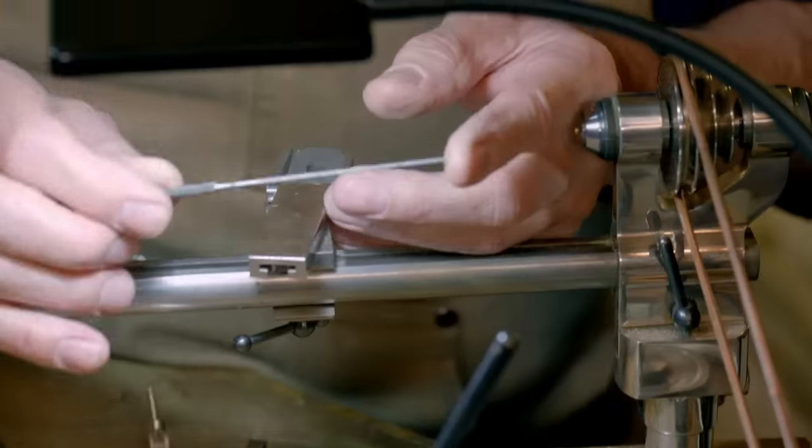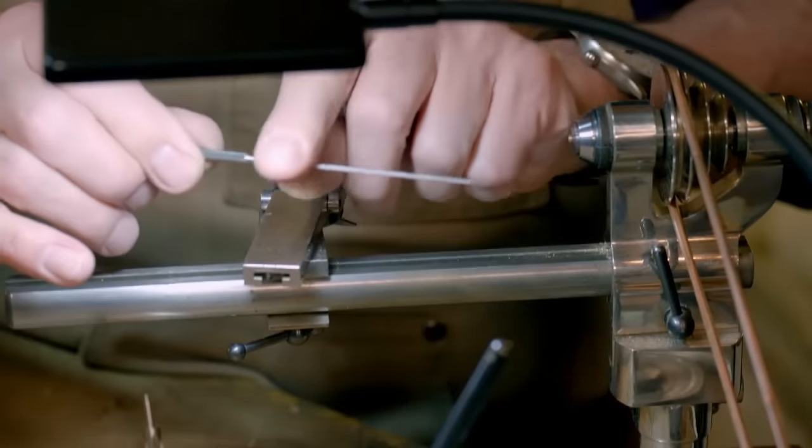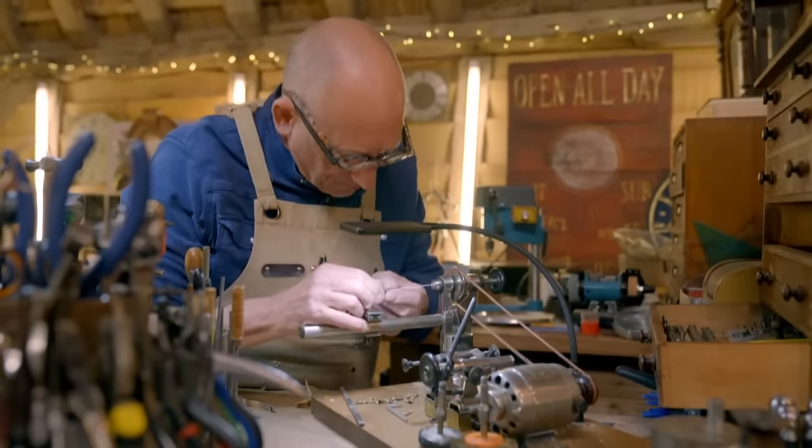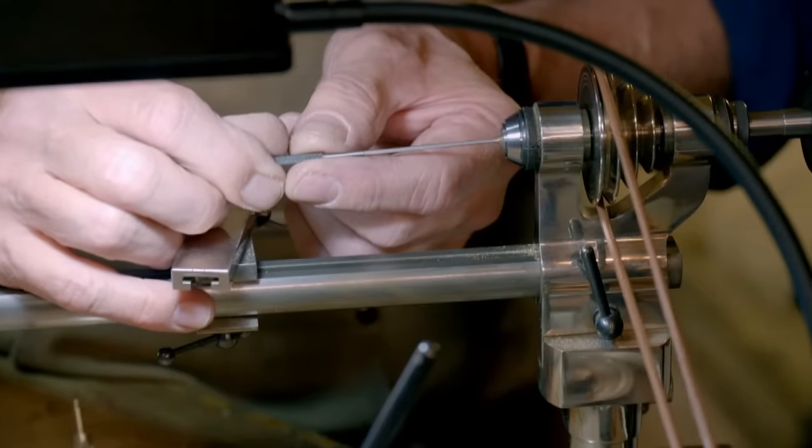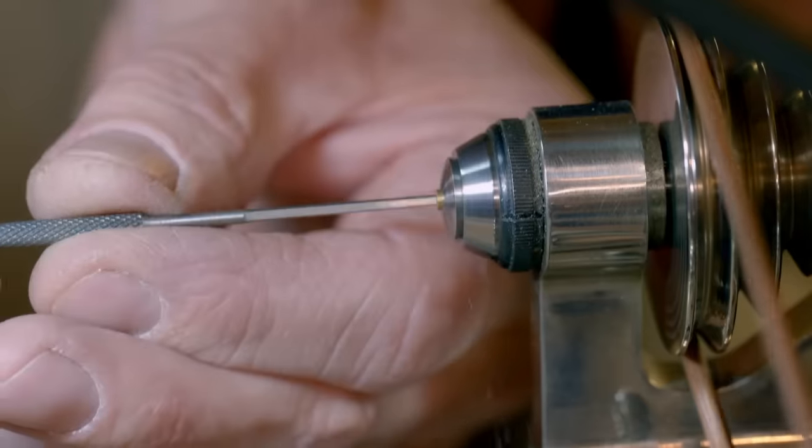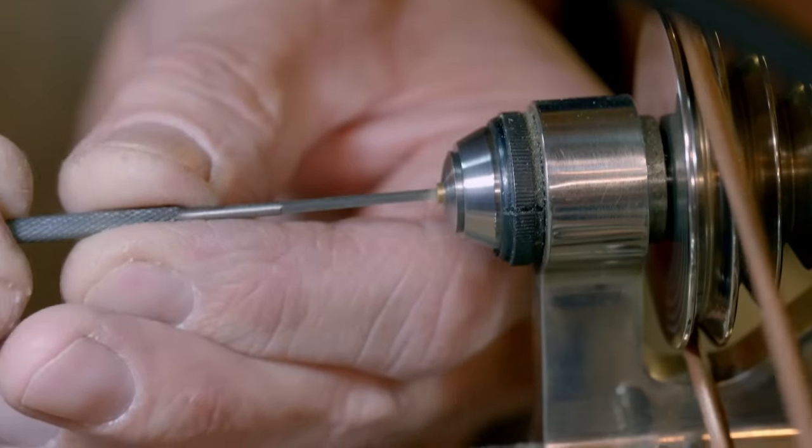I'm just going to open up the hole using a brooch, which is a five-sided tapered cutting tool. As I spin the lathe, I just gently push it in and it opens up the hole nice and evenly.